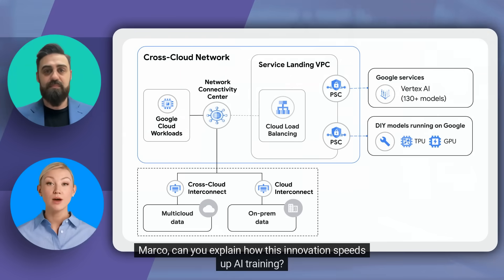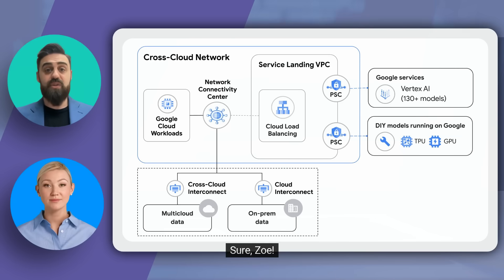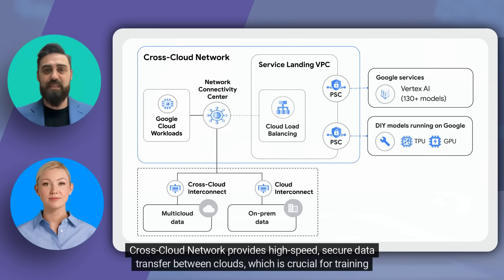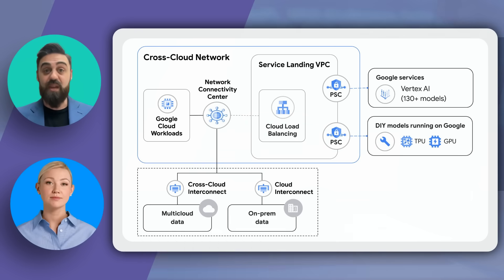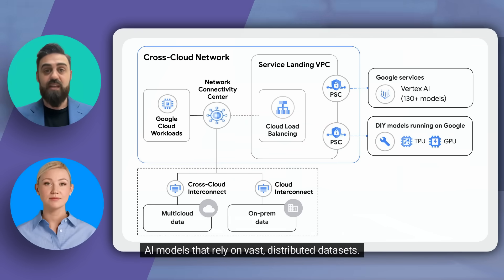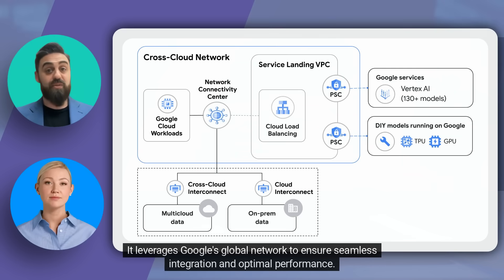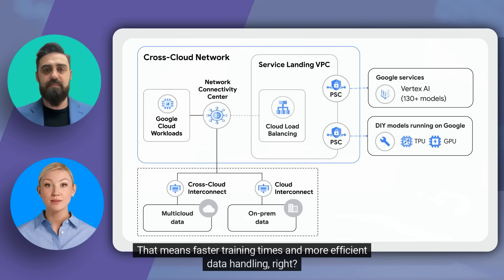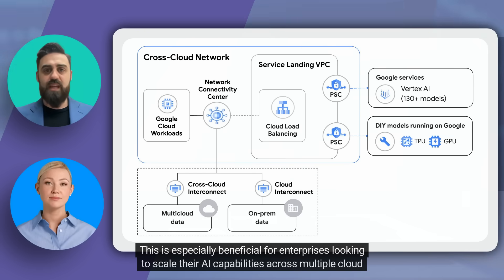First up, the cross-cloud network. Cross-cloud network provides high-speed, secure data transfer between clouds, which is crucial for training AI models that rely on vast distributed datasets. It leverages Google's global network to ensure seamless integration and optimal performance. That means faster training times and more efficient data handling — especially beneficial for enterprises looking to scale their AI capabilities across multiple cloud environments.